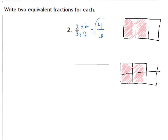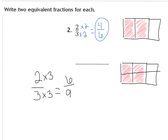They asked me to make 2 equivalent fractions, so far I have 4 sixths. Now I need to make another equivalent fraction to 2 thirds using multiplication. I have 2 thirds again, and I need to multiply the numerator and the denominator by the same number. I'm going to choose the number 3. So 3 times 3 gives me 9, and 2 times 3 gives me 6. So 2 thirds and 6 ninths are equivalent.